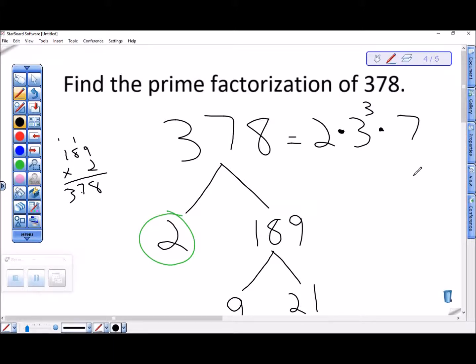Now as a note, you can always check that you're right by taking out your calculator and saying what is 2 times 3 cubed times 7, and you should get 378. If you don't, you can start over. So you can always check your answer by using a calculator to make sure that you got the factors that multiply up to be what you wanted.